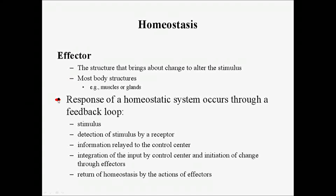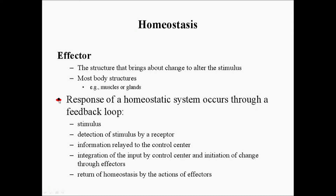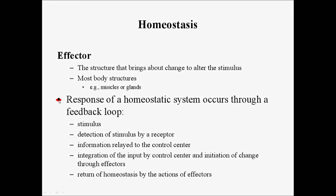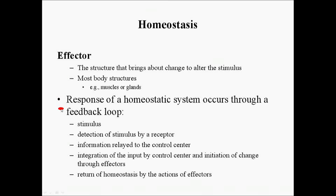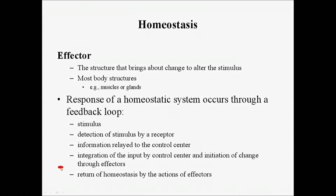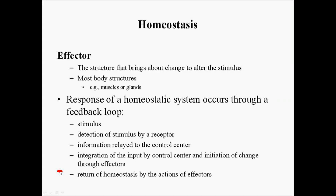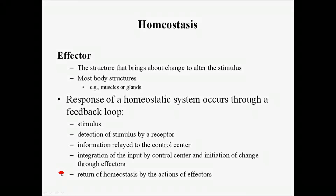The homeostatic control systems provide a response in a series of steps called a feedback loop. Those steps are: you have the stimulus, then detection of the stimulus by sensory receptors, then information is relayed to the control center. There is integration of that information and then an initiation of change — the control center decides what to do and sends a signal to the effectors. Once the effectors receive that input, they return whatever had changed back to its normal range, which is the idea of homeostasis.